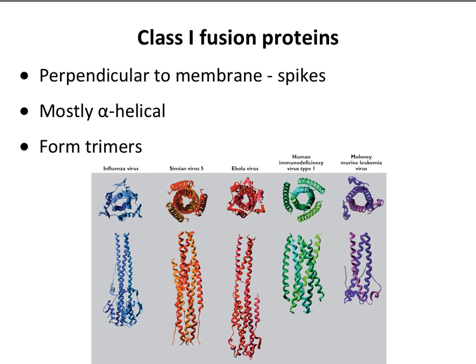This hemagglutinin of influenza is very much like the glycoproteins of a few other viruses: SV5 (a paramyxovirus), Ebola virus, HIV-1, and a retrovirus of mice. They all have very similar trimeric fusion proteins, shown here in their extended low-pH conformation. They all exist on the surface folded up, burying the fusion peptide, and they all rearrange at low pH. These are called class 1 fusion proteins — typically perpendicular to the membrane, mostly alpha-helical, and they all form trimers.